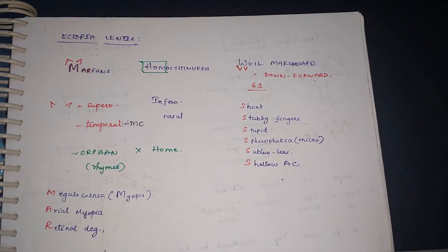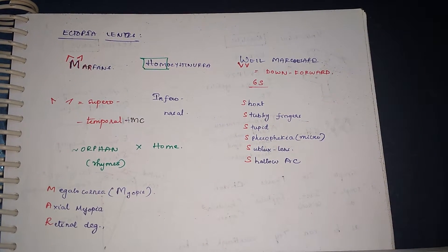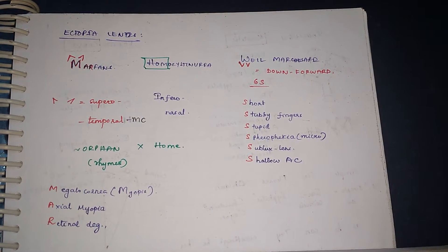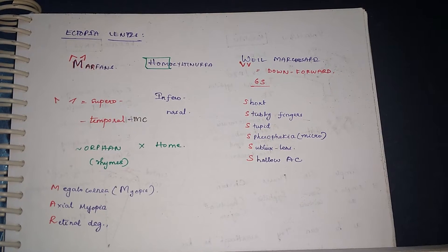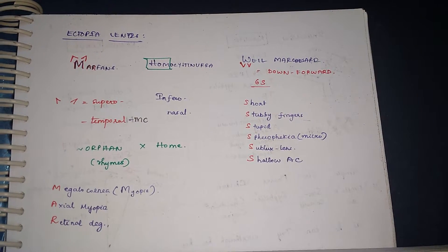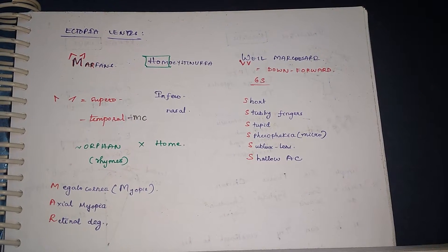Axial myopia, and Retinal degeneration. And Homocystinuria - orphans don't have home, so it is opposite of the direction of Marfan's, that is inferonasal.